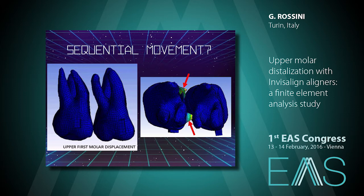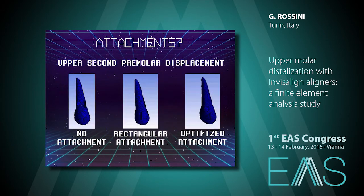Regarding attachments, we replicated the experiment by Gomez and collaborators. Without attachment, we obtained uncontrolled tipping. With a rectangular vertical attachment, there is more control and more intrusion, but still uncontrolled tipping. With the optimized attachment, we can see that there is a distal bodily movement.